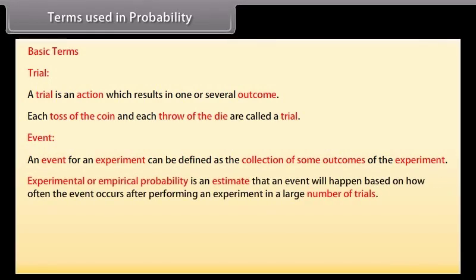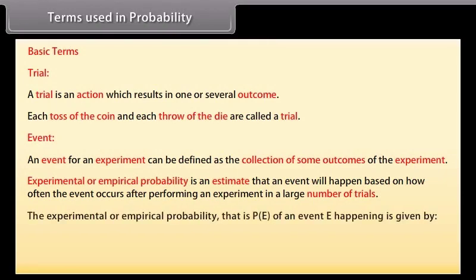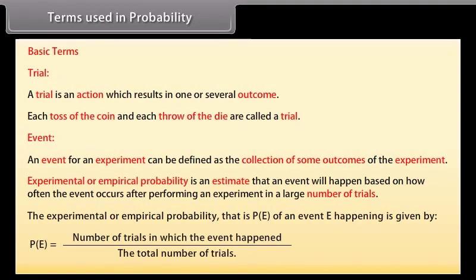Experimental or empirical probability is an estimate that an event will happen based on how often the event occurs after performing an experiment in a large number of trials. The experimental probability P(E) of an event E is given by P(E) equals number of trials in which the event happened upon the total number of trials.